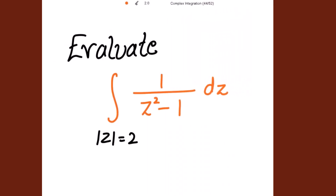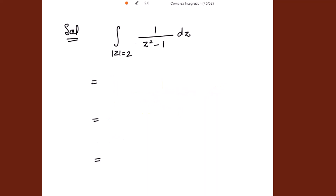Good morning. We need to evaluate the integral of 1 over z squared minus 1, dz over the circle |z| = 2. First we need to factorize the denominator. So this is the integral of 1 over z minus 1 times z plus 1, dz over the circle |z| = 2.